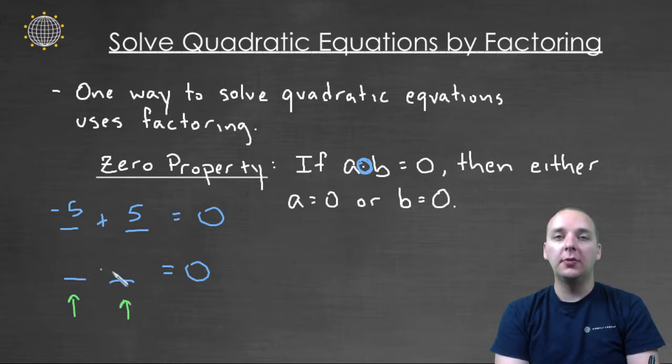Because if you have a product of two non-zero terms, the product is not going to be zero either. It would have to be zero times something, and then you would get zero for the product.